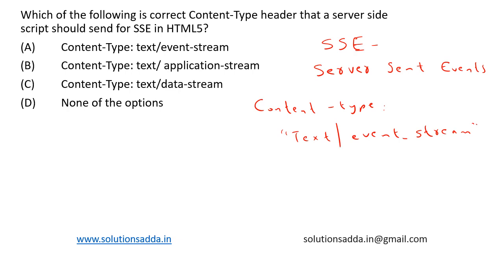So, the correct option here is Option A: content-type: text/event-stream. This is the correct answer.